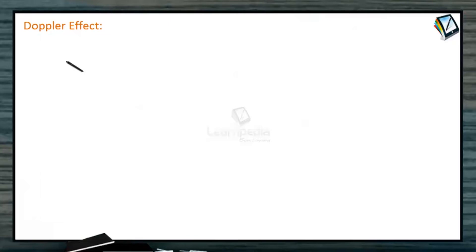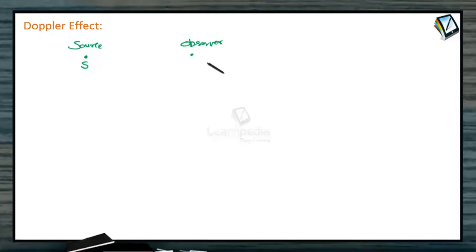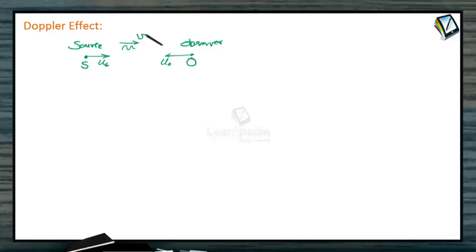We will study about the Doppler effect. Here is some source of sound S, and here is some observer. We are assuming that source and observer both are moving towards each other. So source is moving with a speed of us and observer is moving with a speed u0, and the speed of sound is v. No wind is there, nothing else. This is the situation when source is moving towards the observer and observer is moving towards the source.